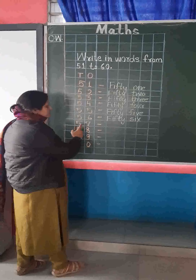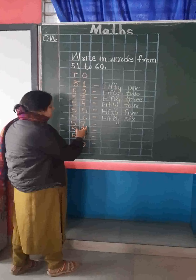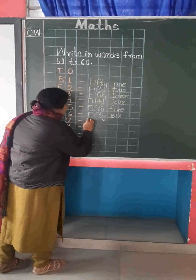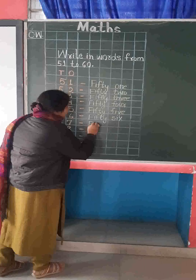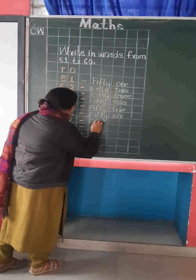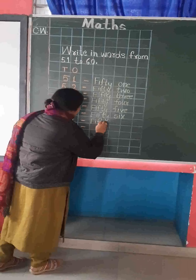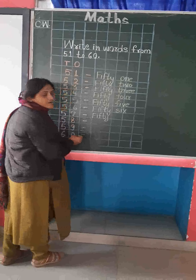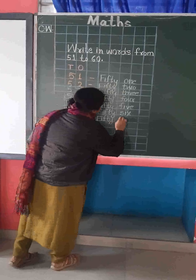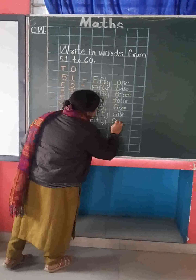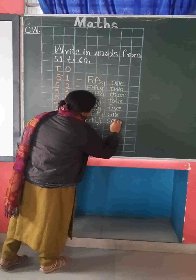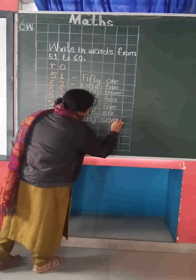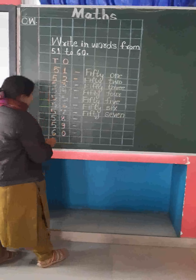Now this number is 57. 50: F, I, F, T, Y. 50. And what is the spelling of 7? F, E, B, T. 57.